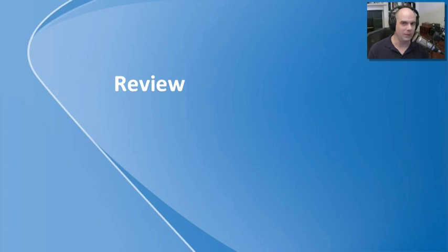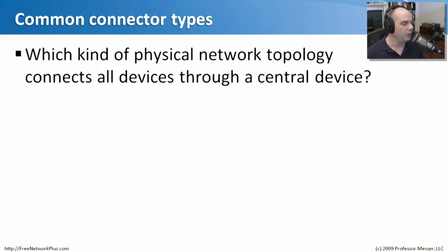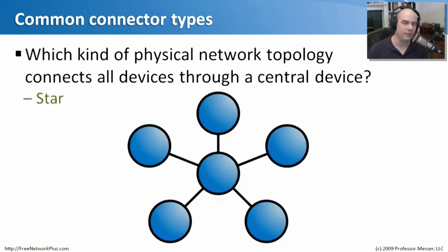Let's review some of these network layouts and see if we can remember what some of them are like. Our first question is, what kind of physical network topology connects all devices on your network through another central device? It's one of the first ones we looked at, and if you recall, that is a star, where I have a device in the middle, perhaps an Ethernet switch, and it's connecting out and allowing connectivity to all other devices on the network.